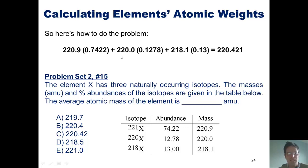We would then add to that 220.0, which is the mass of the second isotope, multiplied by 0.1278, the percentage of that isotope. We would then add to that 218.1, the mass of the last isotope, multiplied by 0.013.